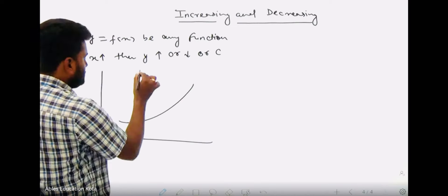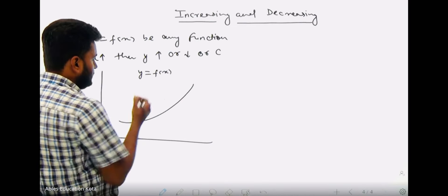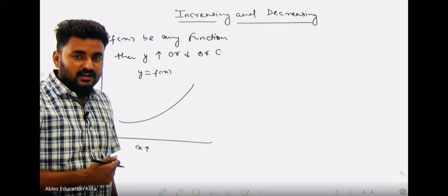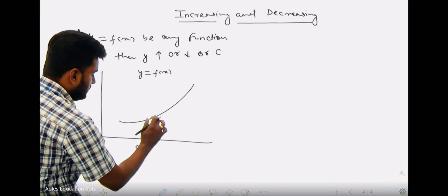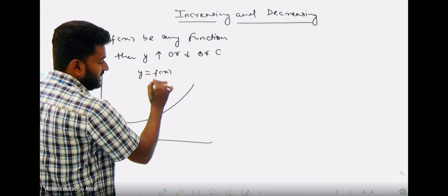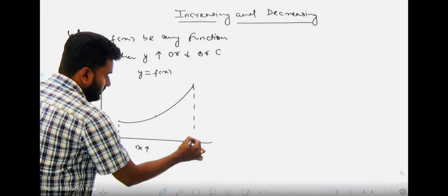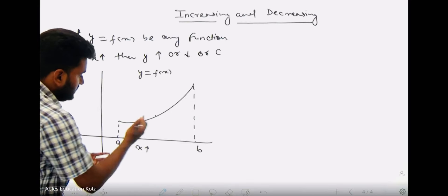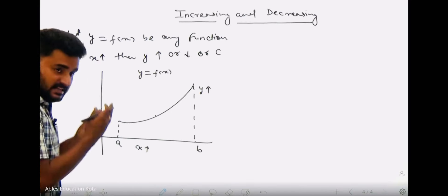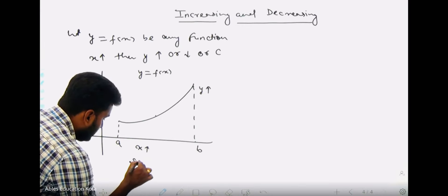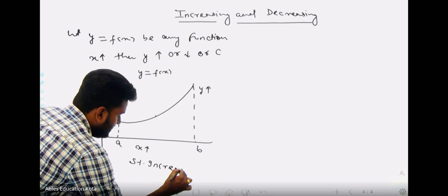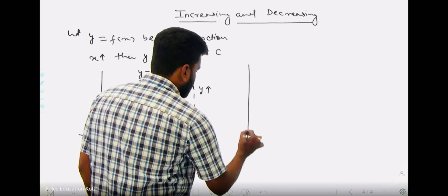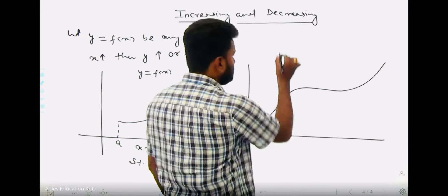In this figure, you can see y = f(x) defined from a to b. The value of x is increasing at each point, and you can also see the value of y is also increasing. In this case, we will say the function is strictly increasing.